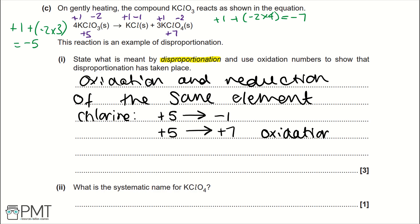Linking to oxidation and reduction: oxidation is the +5 to +7 change, and reduction is the +5 to -1 change in oxidation state. To get the three marks, you need the correct definition, to identify that it's chlorine, and to give examples of both reduction and oxidation using oxidation states.